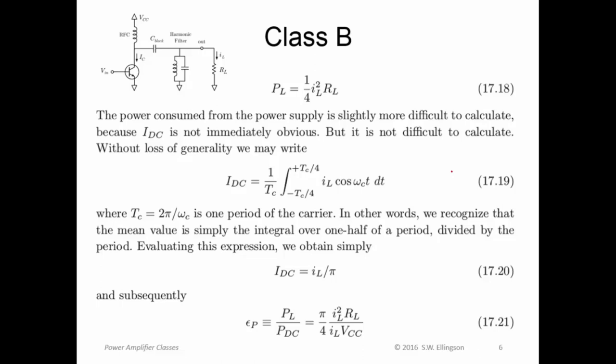So let's work out what the efficiency actually is. It's quite straightforward. The power dissipated by the load resistor, R sub L, is one-half IL squared RL using the same variables that we used in the previous lecture. But we're only pulling half the power because we only have half the waveform. So the power dissipated in the load resistor in Class B is half what we would have pulled if we were in Class A operation. Now the power consumed from the power supply is a little bit more difficult to calculate because that DC current level, the time average DC current level, is not immediately obvious. But it's not hard to calculate either.